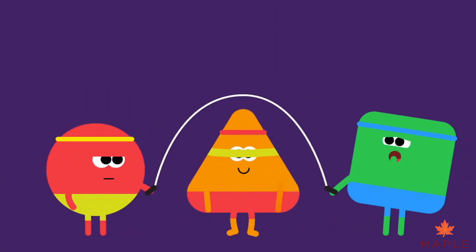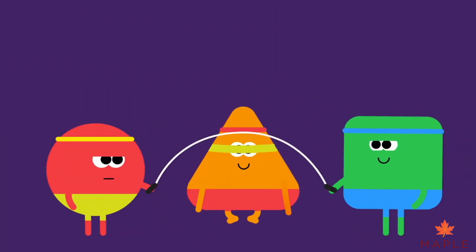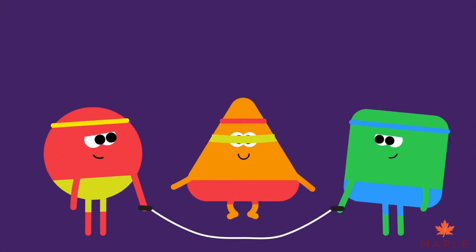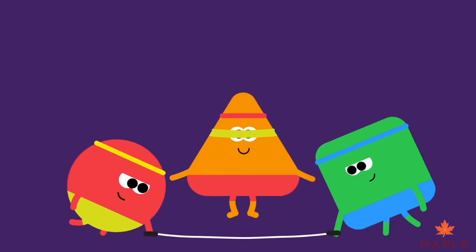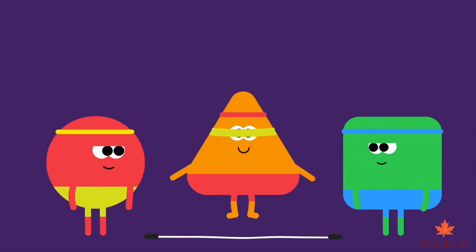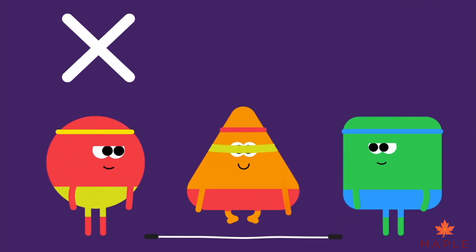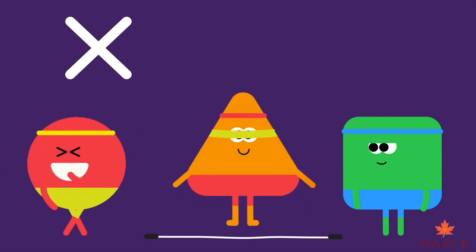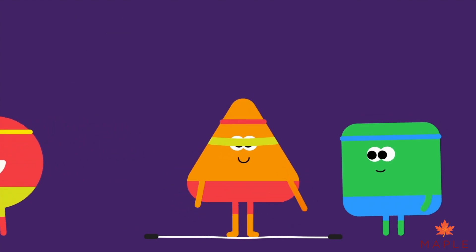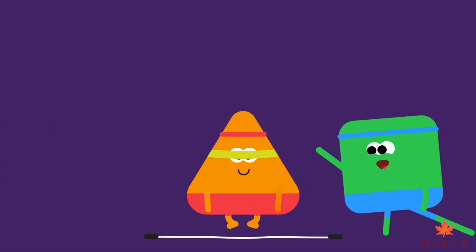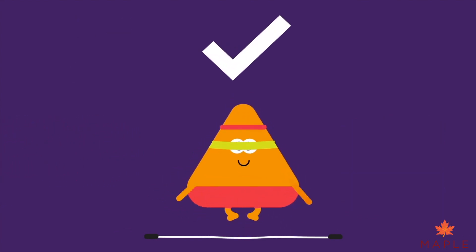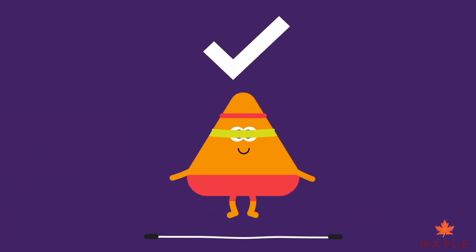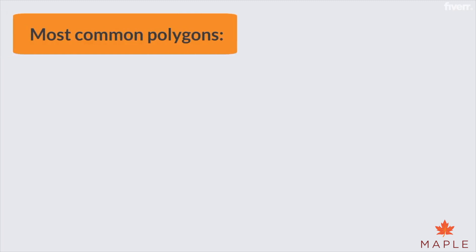Think about some of the common shapes you know. A circle is not a polygon, as it does not have straight sides, but a triangle is a polygon.